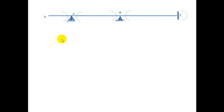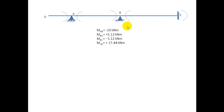Next, we will go for drawing a support BMD. To draw a support BMD, just draw curves like this at every joint. Suppose we solve this example by slope deflection method, moment distribution method, or by stiffness method. Then we are getting these answers. Here, some answers are negative and some are positive. Negative means it is anti-clockwise; positive means it is a clockwise moment.